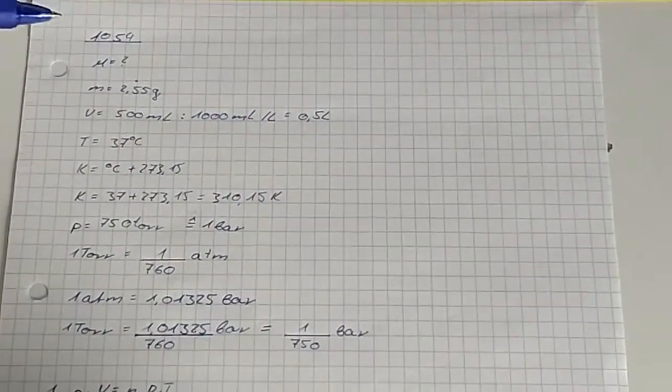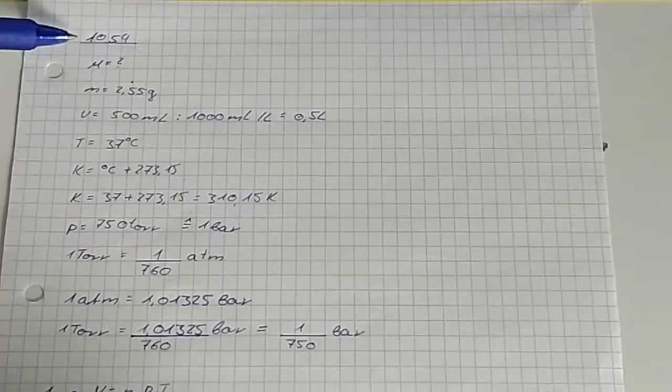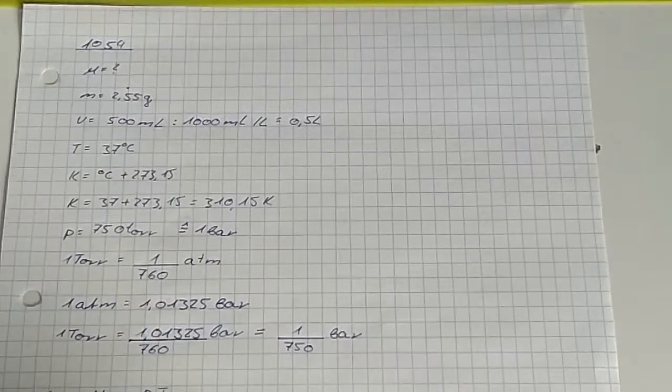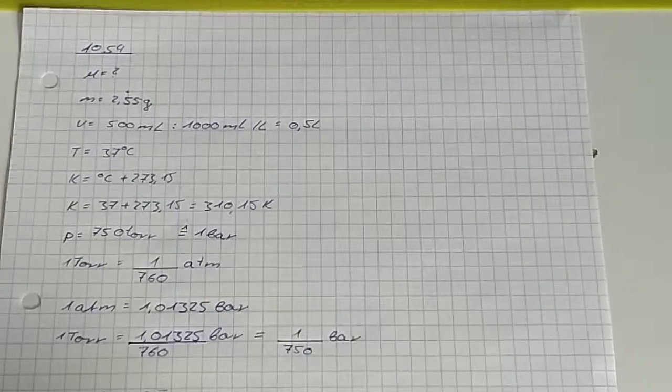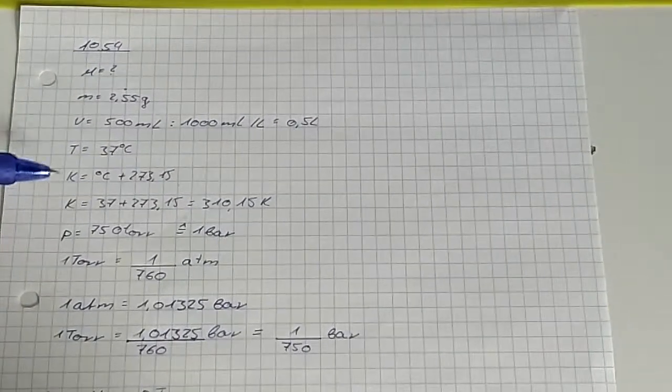Welcome to task 10.54. The objective is to find the molar mass of an unknown gas. The gas should behave ideally. To calculate the mass, we're given the volume, temperature, and pressure.